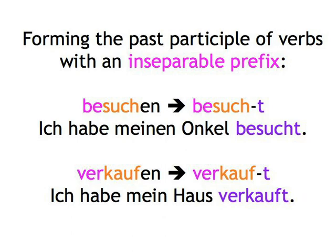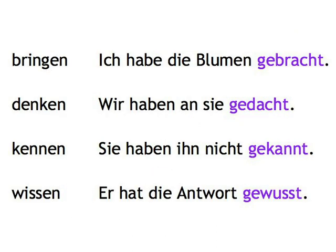There are also a number of verbs in German which are irregular in various ways. Some — the so-called weak irregular verbs — retain the ge- and -t frame but change the vowel in their stem, like these: bringen → Ich habe die Blumen gebracht. Denken → Wir haben an sie gedacht. Kennen → Sie haben ihn nicht gekannt. Wissen → Er hat die Antwort gewusst.